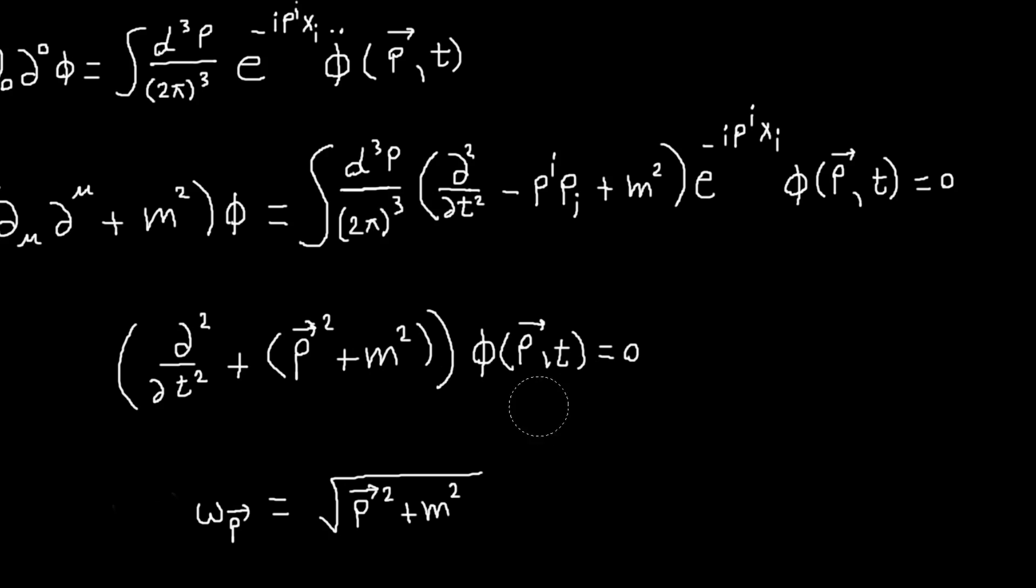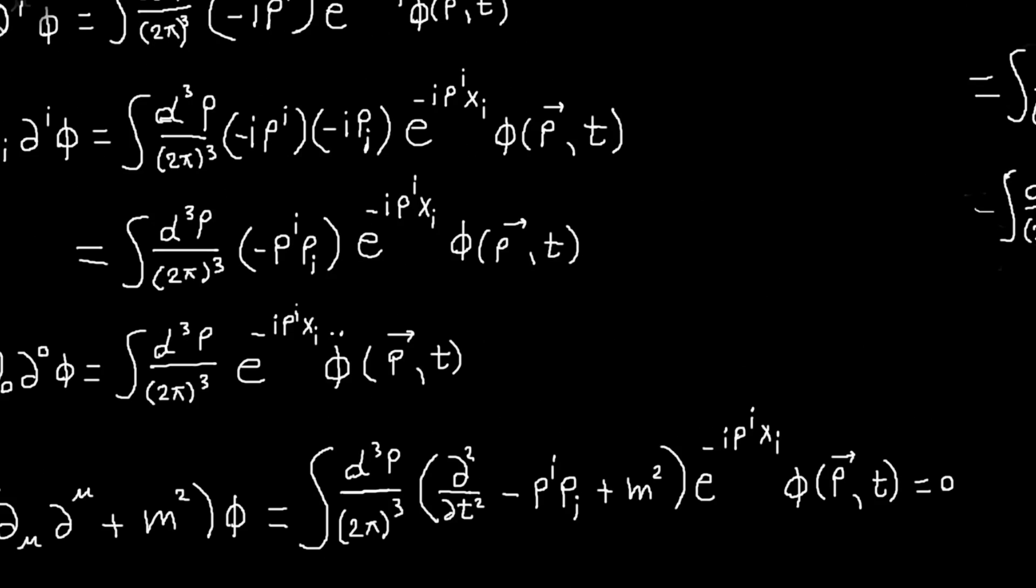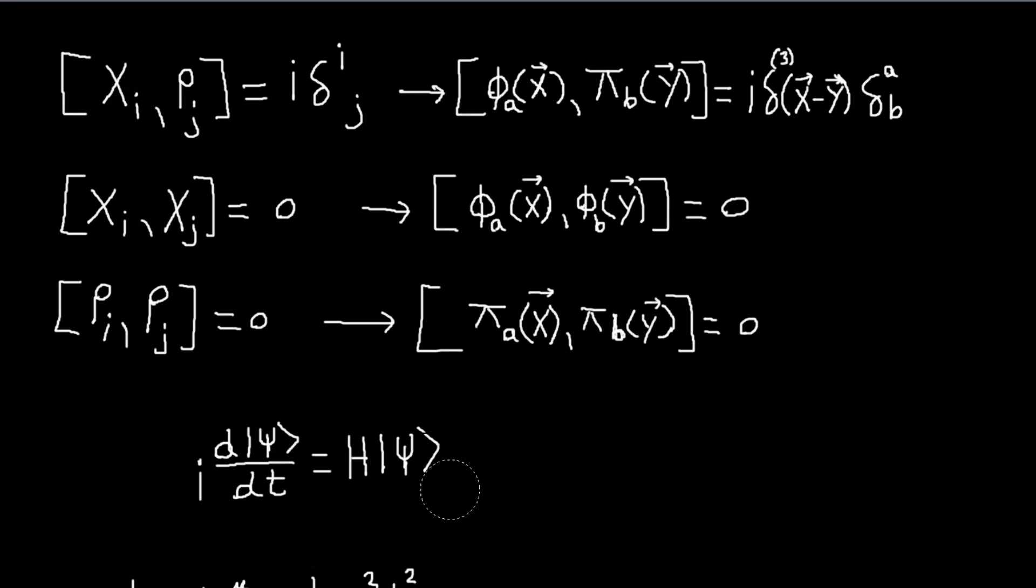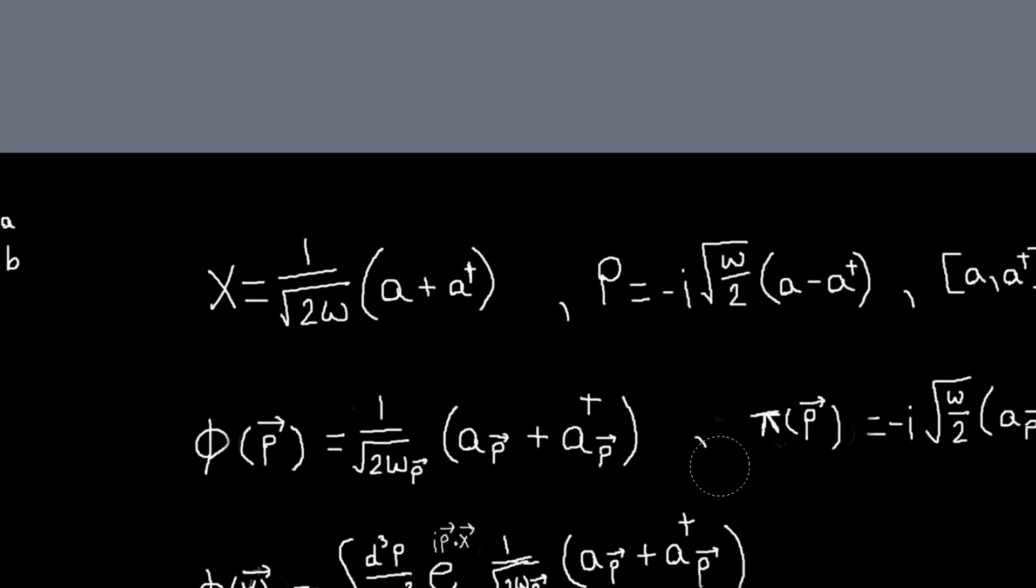That tells us that we can expand our field as a sum of harmonic oscillators, one for each value of p, and they will have frequency omega p. So why do we care about that? Why is that useful?